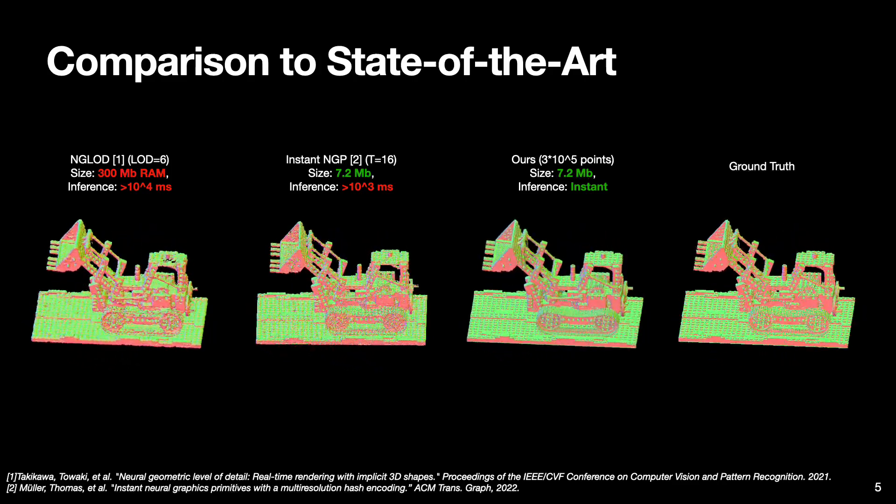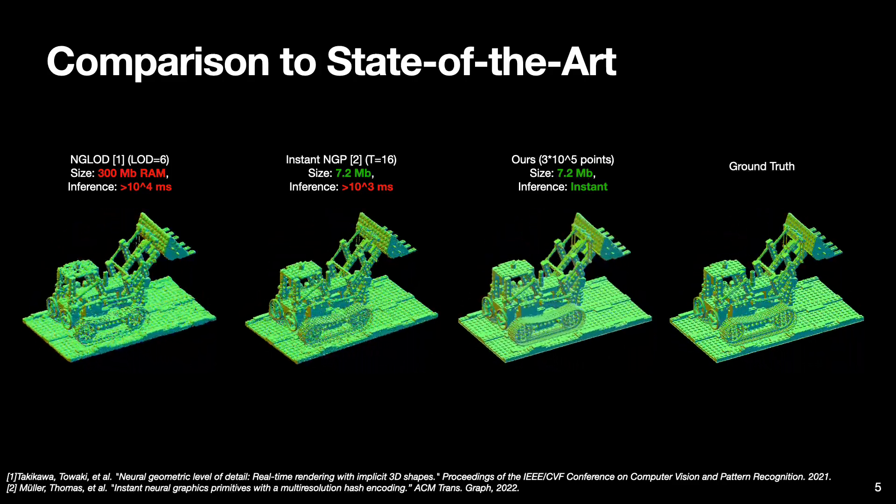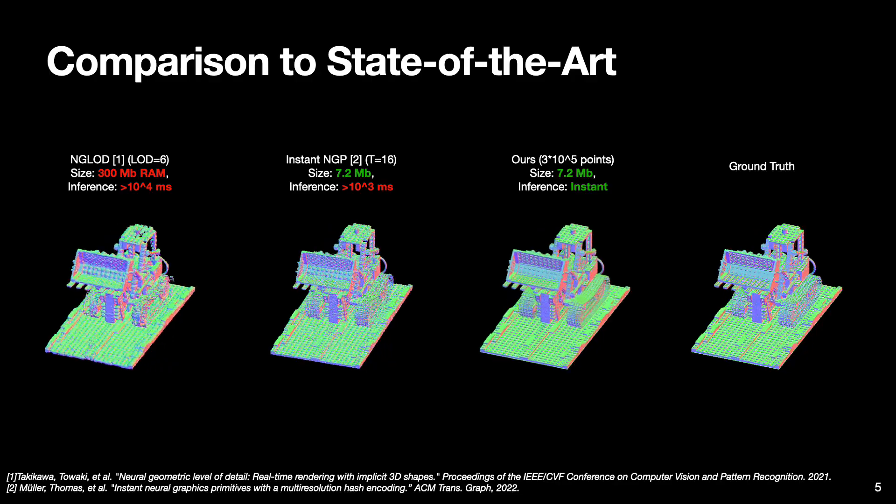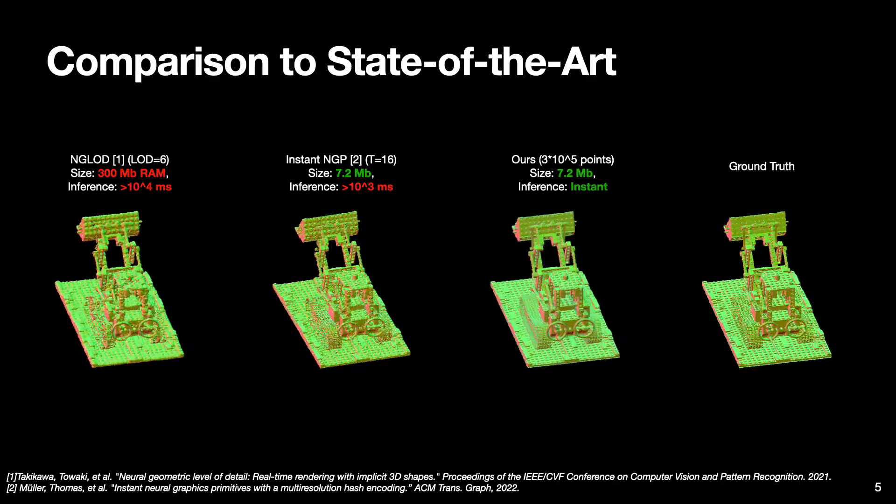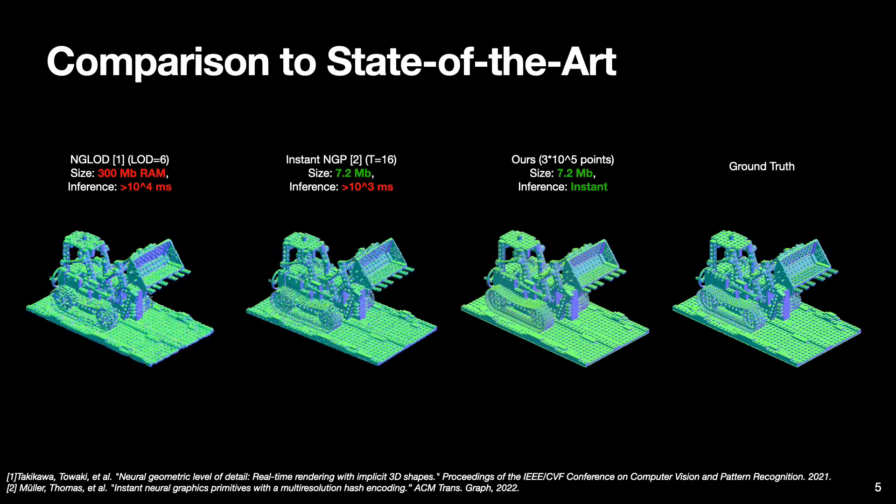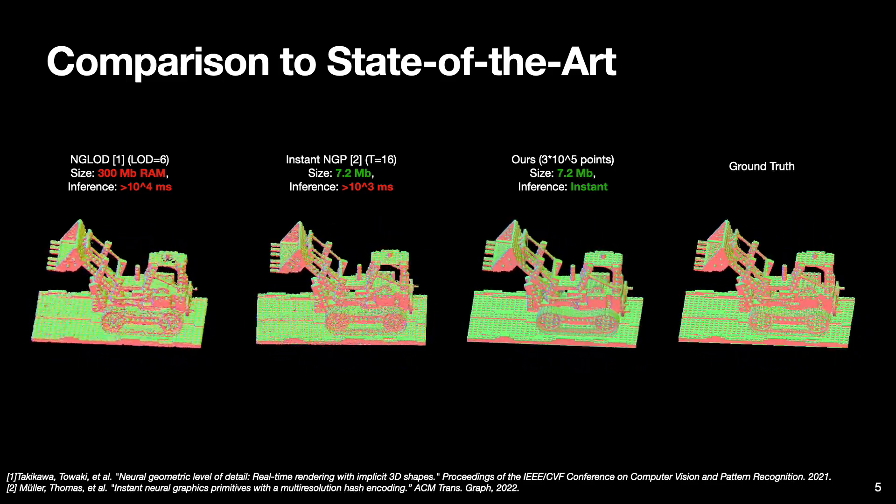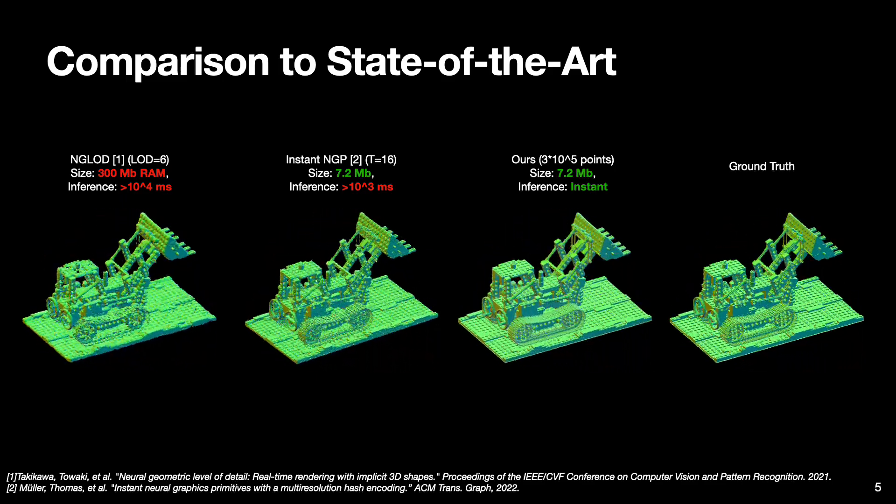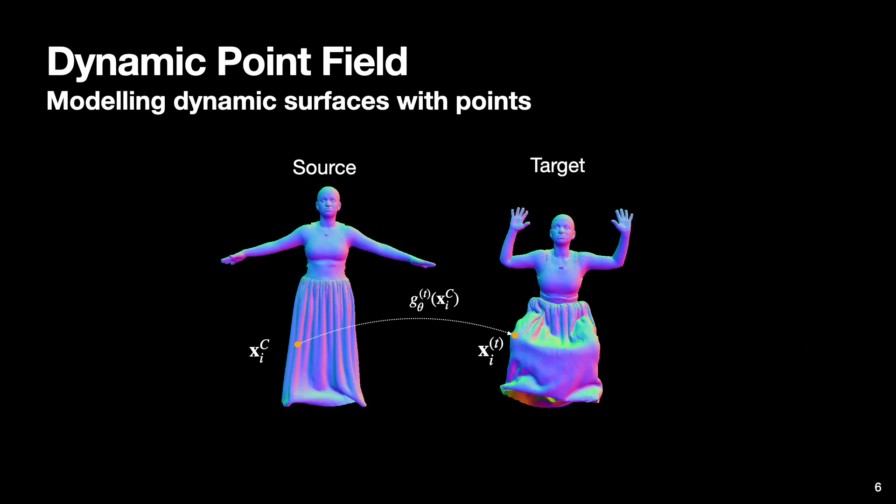Compared to the state-of-the-art implicit models for 3D surface representation, optimized point cloud model offers better reconstruction qualities on all metrics while taking zero inference time thanks to its explicit nature. Next we extend the basic point cloud model to handle dynamic surfaces.